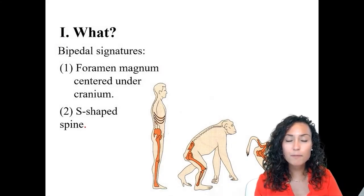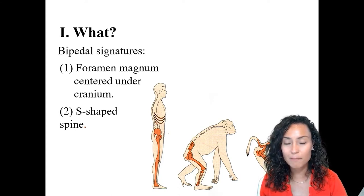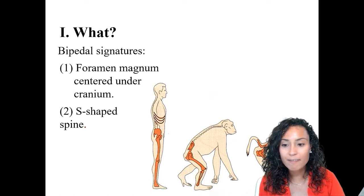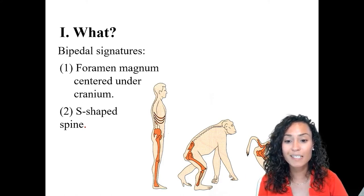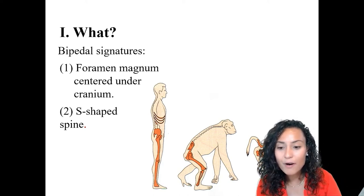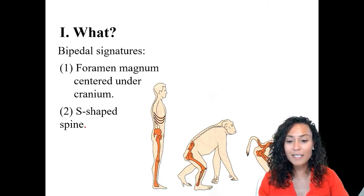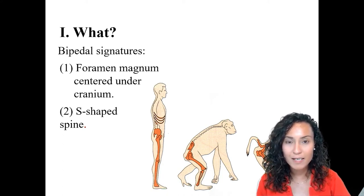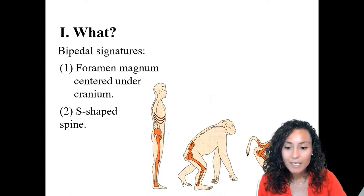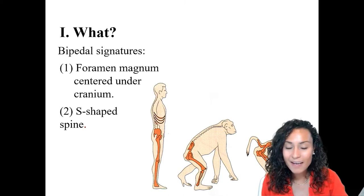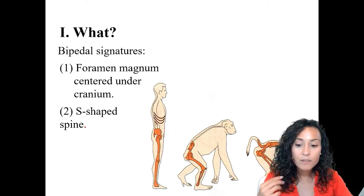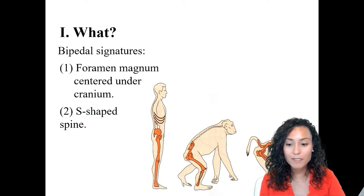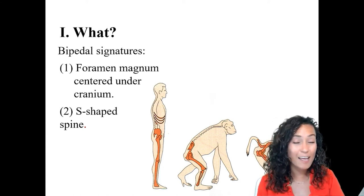Another key difference between quadrupeds and bipeds is the S-shape of the spine. In quadrupedal primates, the center of gravity is located near the center of the torso, whereas in modern humans the center of gravity is in our pelvises. That lumbar curvature of the spine helps bring the center of gravity in bipeds closer to the body's midline, helping keep us balanced. Humans also have one more lumbar vertebra than apes, and these vertebrae are larger, creating a more flexible lower back that allows the back to swivel forward when walking.